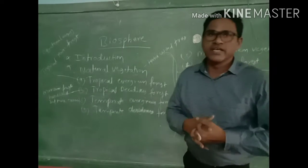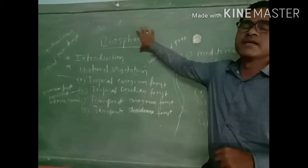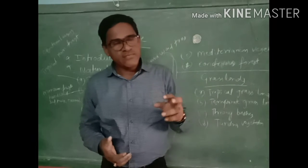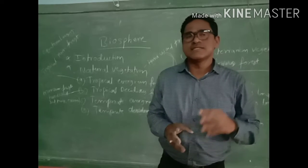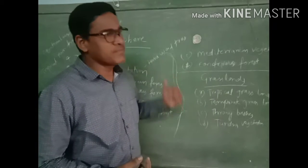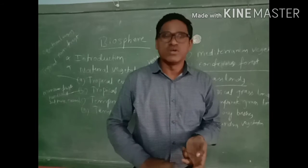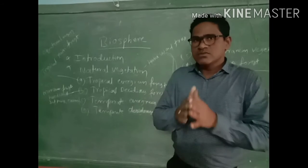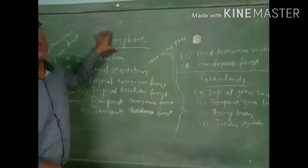Today we are going to learn one more important topic in Class 9, that is biosphere. 'Bio' means life. Life is possible only on the Earth's surface because Earth is the only suitable planet for all living things. Air is available, water is available, natural resources are available, forests are there — that is why all living things live on Earth. Everything that has life on Earth comes under the biosphere.